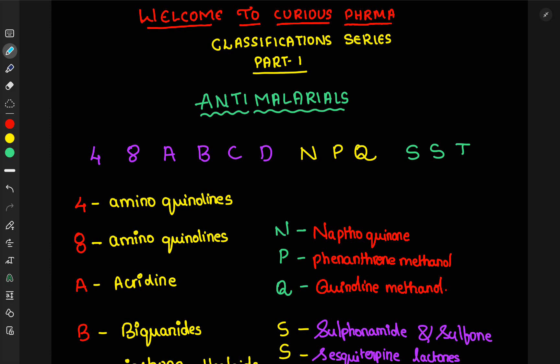Here, our first part consists of antimalarials. They are classified into around 12 types. It is a chemical classification.